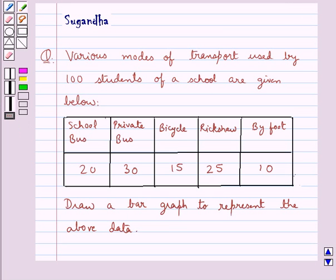Hello and welcome to the session. In this session we discuss the following question: various modes of transport used by 100 students of a school are given below. Draw a bar graph to represent the above data.